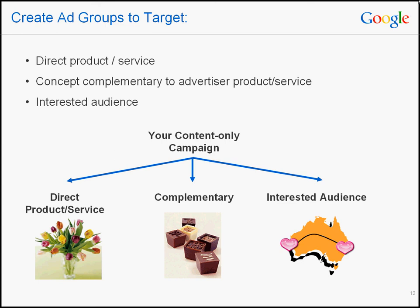We always suggest starting out with a direct target first by creating ad groups that are directly targeted to your product or service. If you find this isn't working, or if you're looking for additional traffic, then consider testing out the other two concepts. Targeting complementary products and specific audiences can be particularly useful for advertisers who have very niche products that people wouldn't normally be searching for.